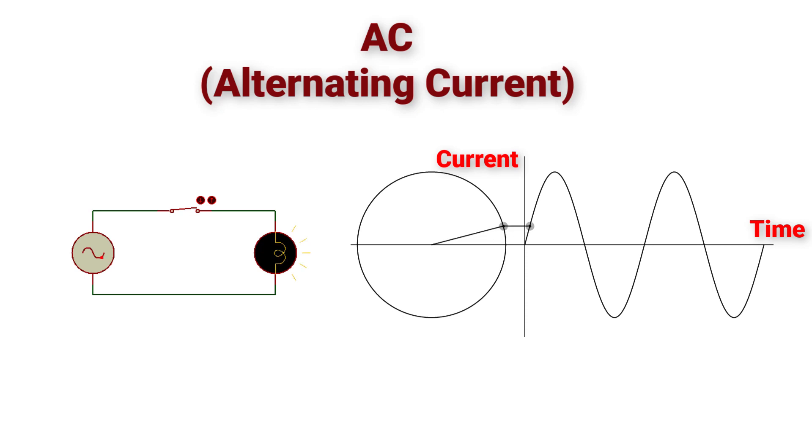It increases with time until it reaches the peak point, then it decreases again with time until zero. At this point, it will reverse direction and increase in the negative value until it reaches the peak point, then it will decrease to zero again. Then it will reverse direction to the positive value again, and so on, and it will keep repeating itself.